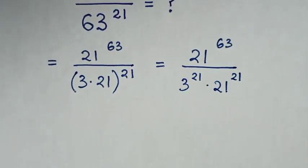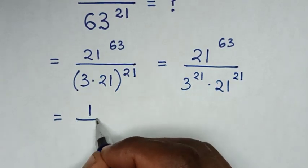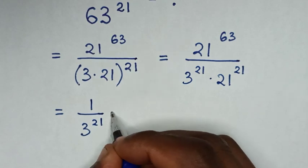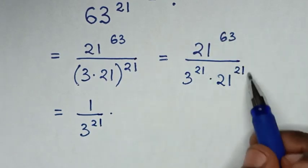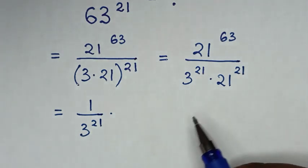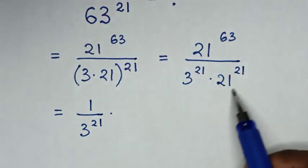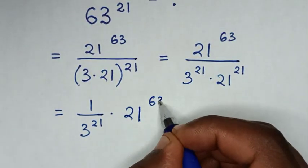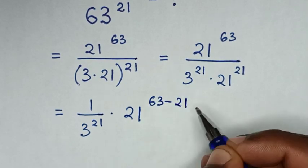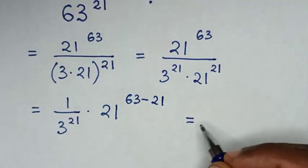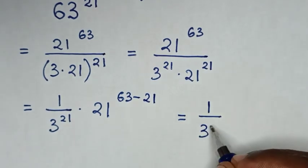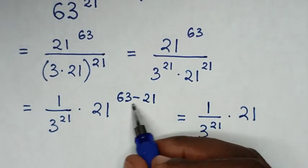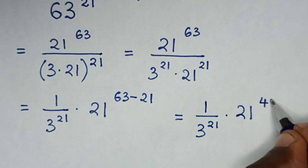Then in the next step it will be equal to 1 over this exponent 3 power of 21. Then we take this exponent divided by this exponent — so it will be same base of 21, then this power minus this power, so power of 63 minus power of 21. So it will be equal to 1 over 3 power of 21, then times 21 power of 63 minus 21, which is power of 42.